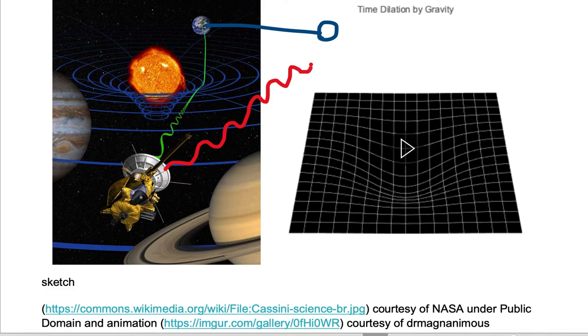The signal being sent from the Cassini space probe would travel unimpeded and reach a receiver on Earth in a time of t.